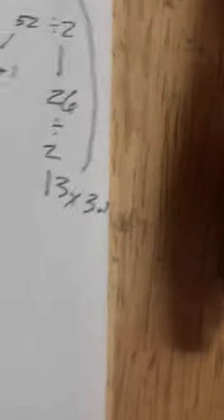Divide by 2 is 13, times 3, plus 1. Then you go over here because you run out of paper. 39 plus 1 is 40, divided by 2 is 20. Divide by 2 is 10. Divide by 2 is 5. Times 3, plus 1: 15 plus 1 is 16. Divide by 2 is 8. 8 divided by 2 is 4, divided by 2 is 2, divided by 2 is 1.